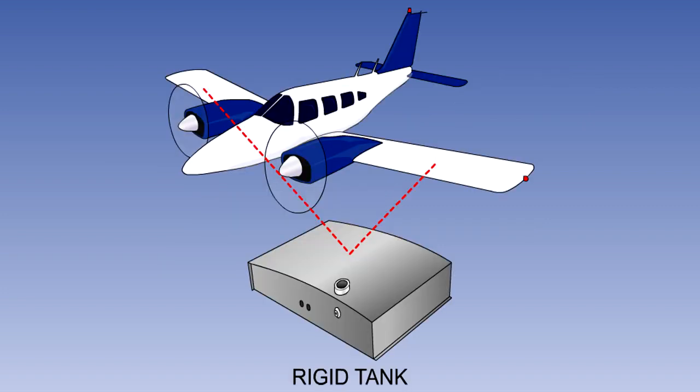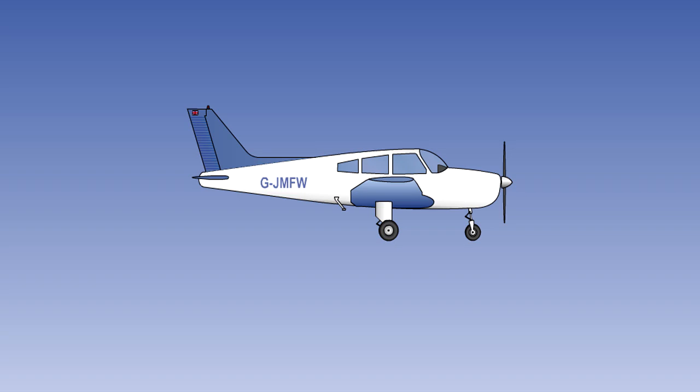A rigid tank is a sealed container mounted in or on the aircraft wing or fuselage. Rigid tanks are installed in a compartment designed to accommodate the tank. They are typically of metal construction and may be removed for inspection, replacement or repair. The aircraft does not rely on the tank for structural integrity. These tanks are commonly found in smaller general aviation aircraft.